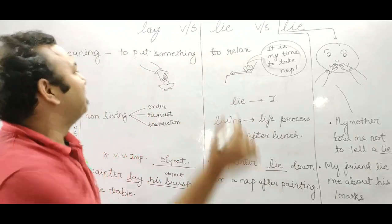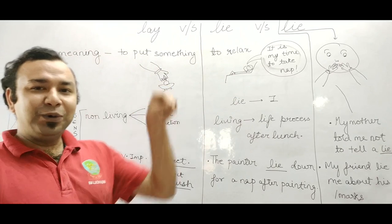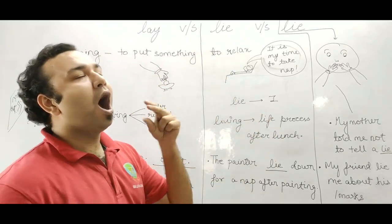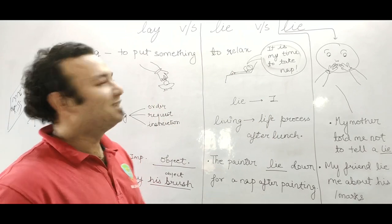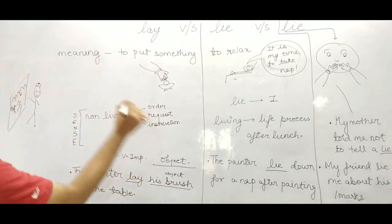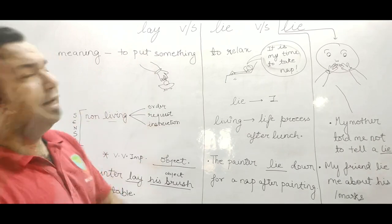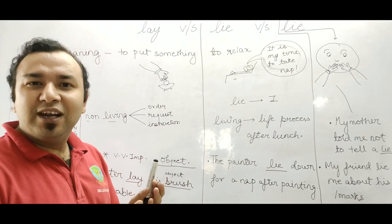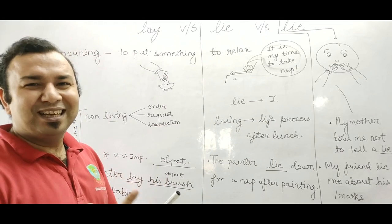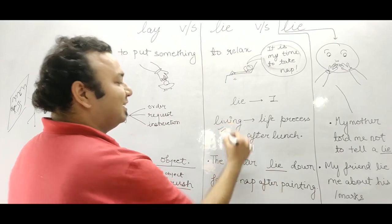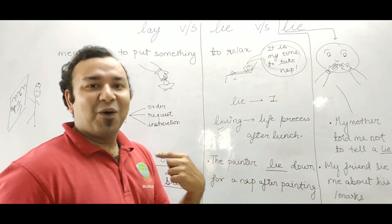So it's very simple. Lay means to keep something and lie means to relax, just like the person, it's his time to relax. Lay, to put something, actually it's not living, it's not fun. And lie, it's a life process, it's necessary and it's living.